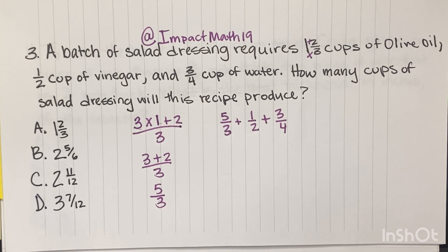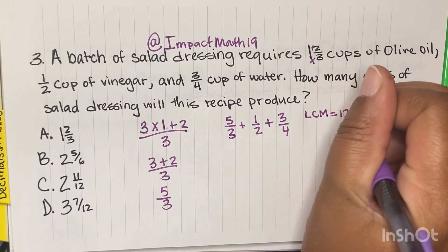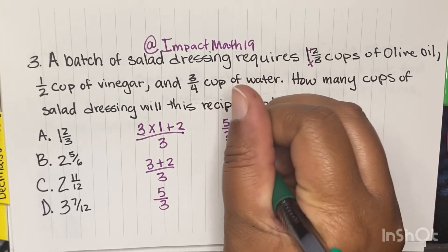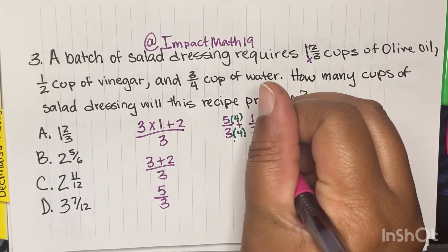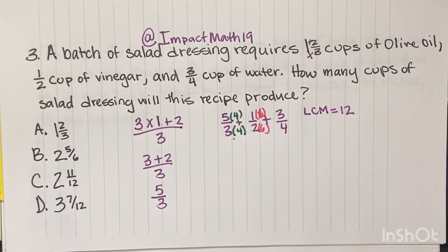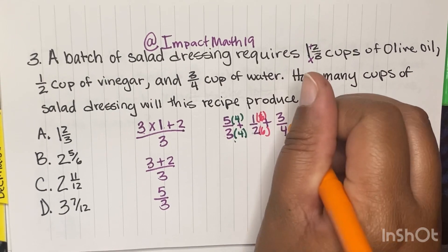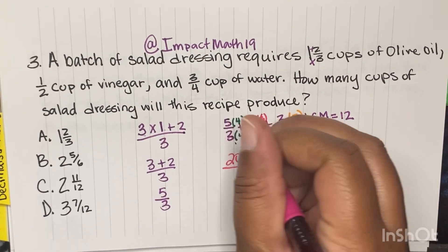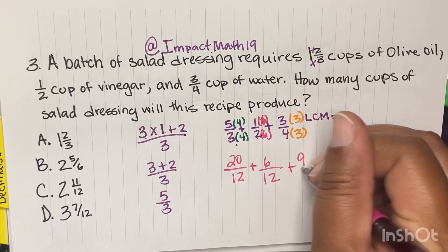In order to add fractions, you have to have the same denominator. What do 3, 2, and 4 all go into? They all go into 12. So I need the bottom numbers to be 12. 3 times 4 gives me 12, and what I do to the bottom I must do to the top. 2 times 6 gives me 12. And 4 times 3 gives me 12. So: 5 times 4 is 20 over 12; 1 times 6 is 6 over 12; and 3 times 3 is 9 over 12.